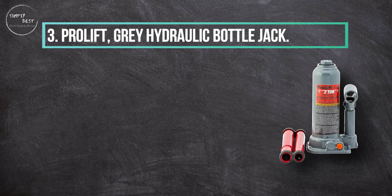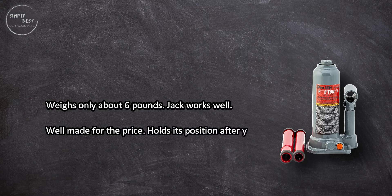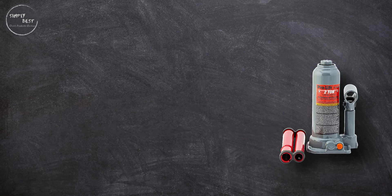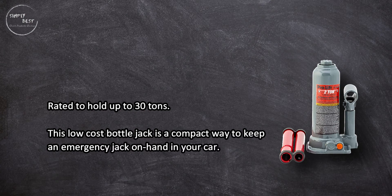Grey Hydraulic Bottle Jack weighs only about six pounds. Jack works well, well-made for the price, and holds its position after you set it. Rated to hold up to 30 tons, this low-cost bottle jack is a compact way to keep an emergency jack on hand in your car.